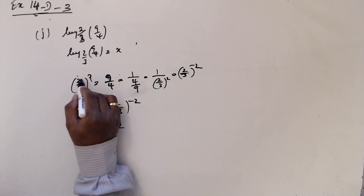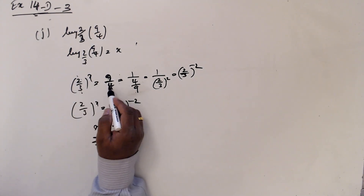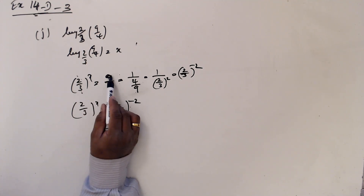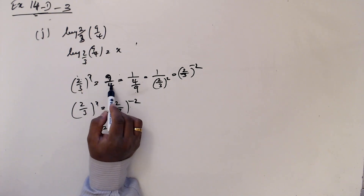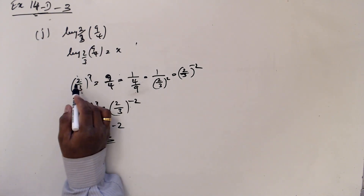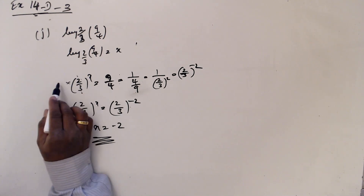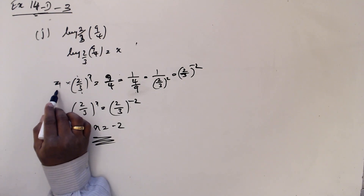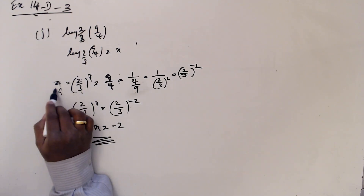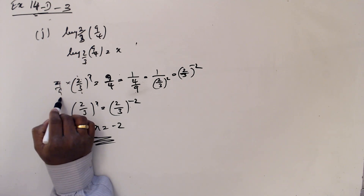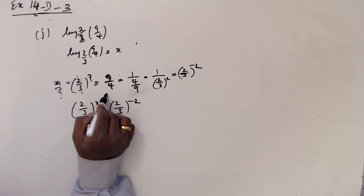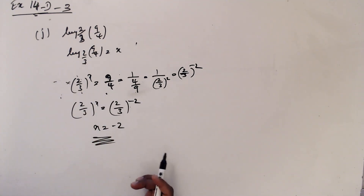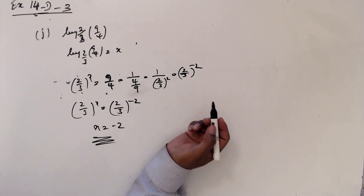When you look at 2/3, you want to feel that this looks like the other way around — so it is a multiple. If I square this, 2 becomes 4 and 3 becomes 9, so this is 4/9. But this is 9/4, then you want to think about how you are going to solve it using the mathematical technique of writing 1 over 4/9.